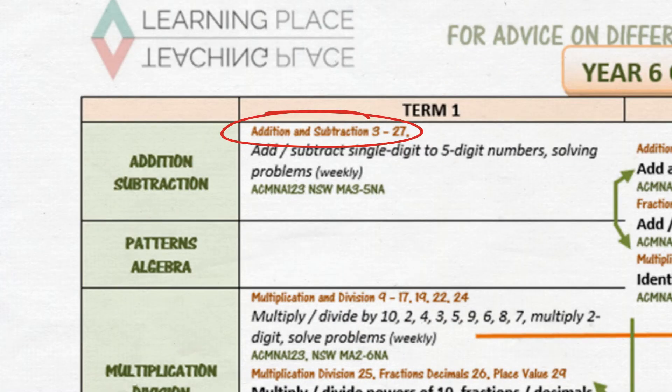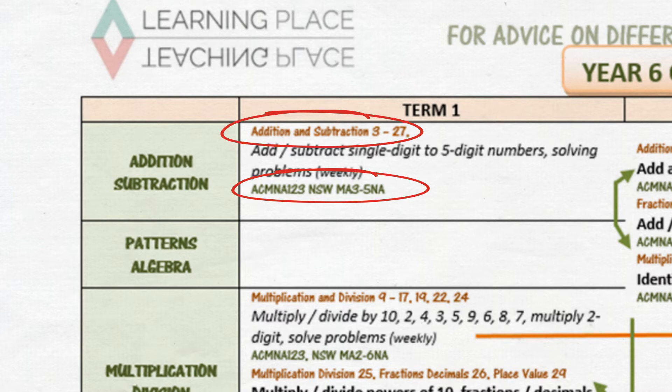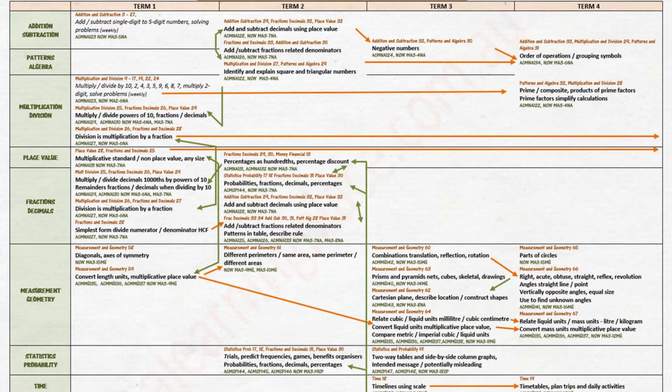The concept name and level is the name and level used at a learning place, a teaching place. The abbreviated text identifies the Australian curriculum and NSW syllabus content descriptions.